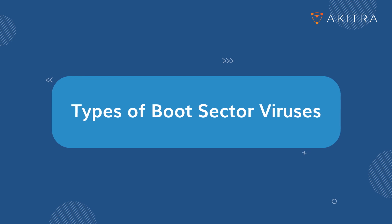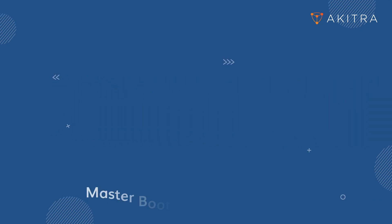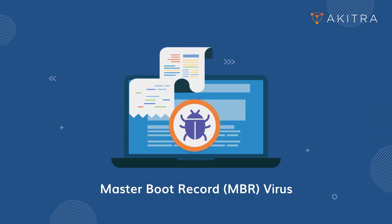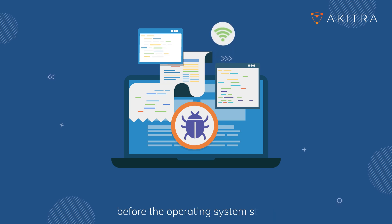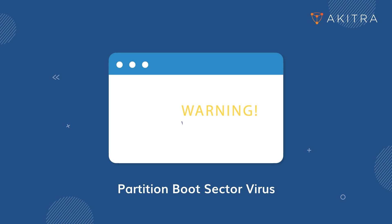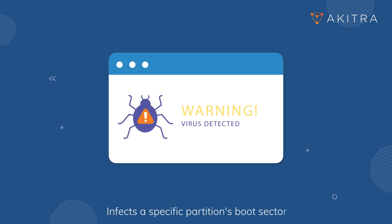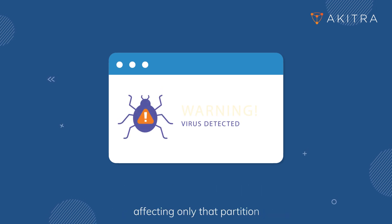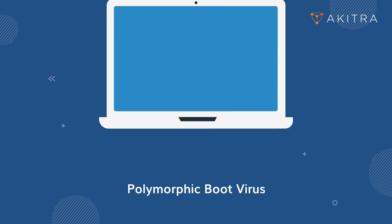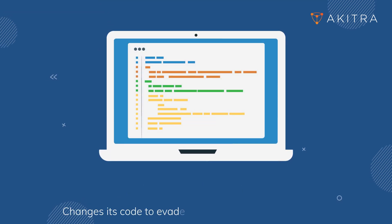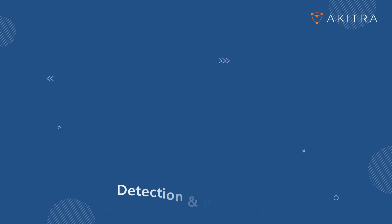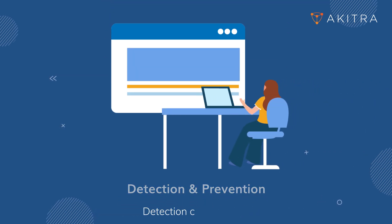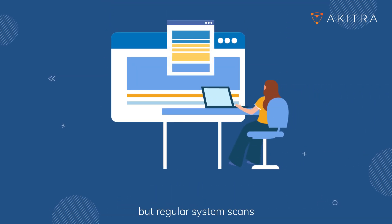There are several types of boot sector viruses. The Master Boot Record (MBR) virus alters the MBR to load malicious code before the operating system starts. The Partition Boot Sector virus infects a specific partition's boot sector, affecting only that partition. The Polymorphic Boot Virus changes its code to evade detection by antivirus software.